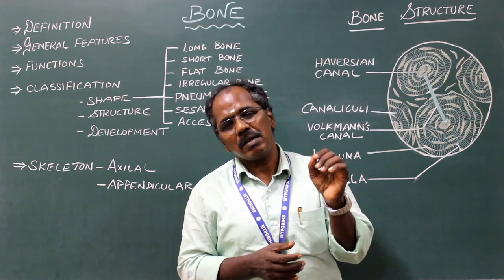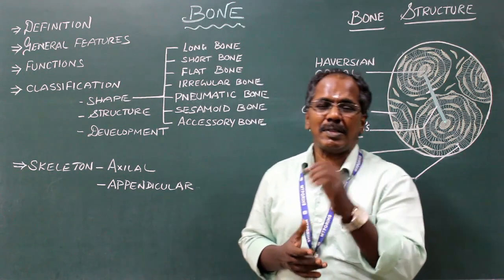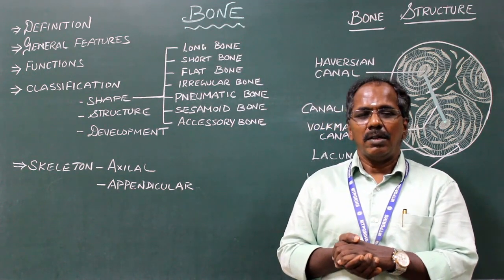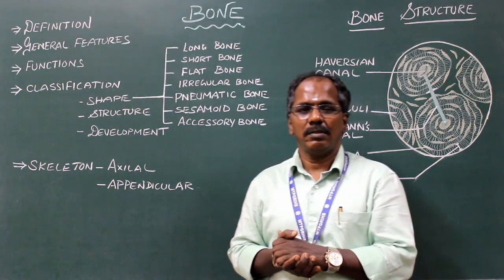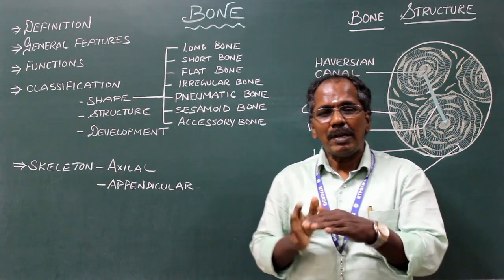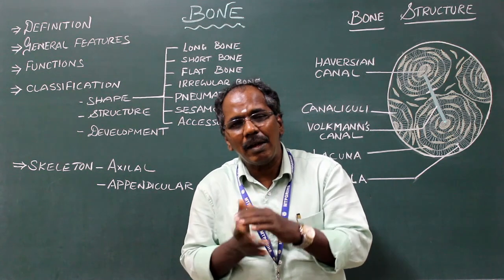The bone cells are known as osteocytes. Immature bone cells are known as osteoblasts. The bone is covered or lined by periosteum.